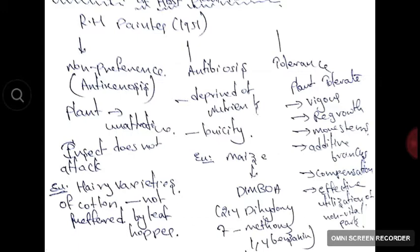Non-preference is also called anti-xenosis. In non-preference, the plant becomes a non-preferred host to the insect — the host makes itself unattractive in order to prevent insect infestation. For example, hairy varieties of cotton are not preferred by leafhoppers.